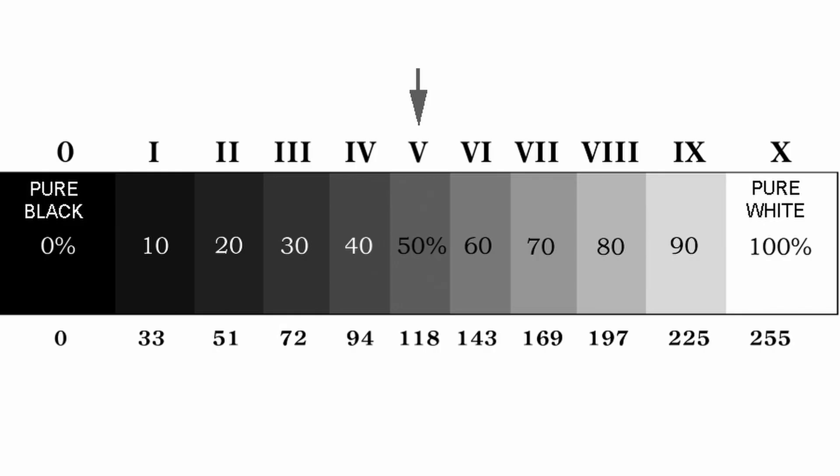Ansel Adams is the greatest landscape photographer. He coined the Zone System, which includes 10 zones starting from 0. Zone 0 through Zone 10 — so Zone 5 is the center, the middle point between pure black and pure white.